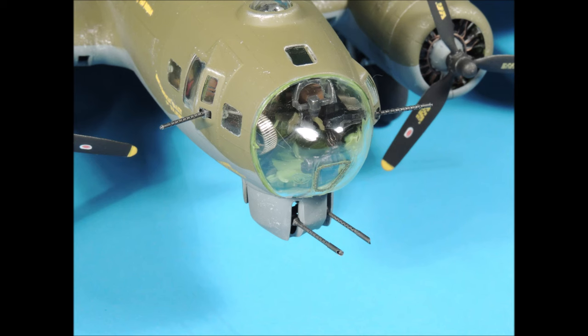Welcome to part 7 of our multi-part series on detailing and building the Revell Monogram 1:48 scale B-17G. In this video, we'll focus our efforts on detailing all of the .50 caliber machine guns. So, without further ado, let's get started.